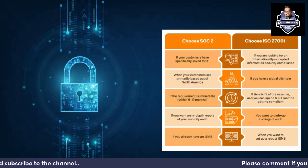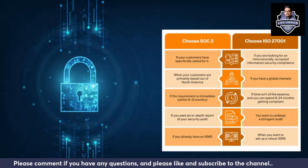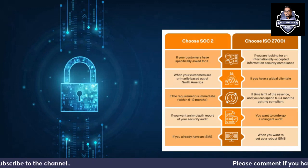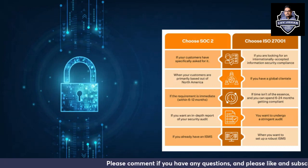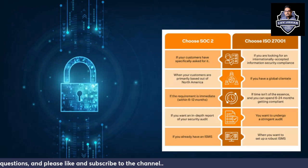If you want an in-depth report of your security audit, go for SOC 2. If you go for ISO 27001, you get a more stringent audit. Choose SOC 2 if you already have an ISMS in place. Choose ISO 27001 when you want to set up a robust ISMS. These two are very different things — don't get confused. Choose SOC 2 when you have already implemented an ISMS.